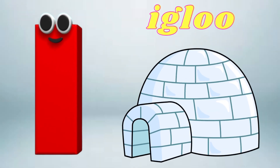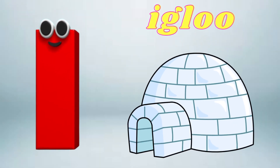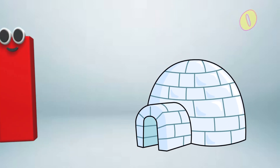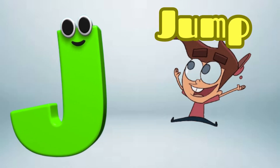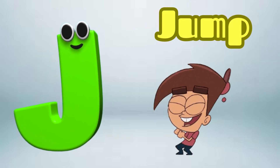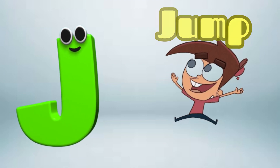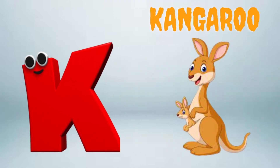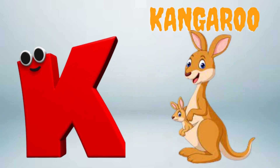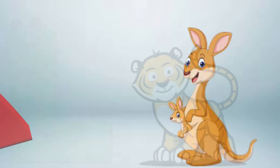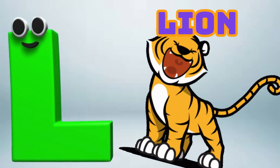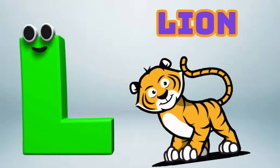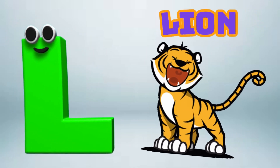I is for Igloo, I-I-Igloo. J is for Jump, J-J-Jump. K is for Kangaroo, K-K-Kangaroo. L is for Lion, L-L-Lion.